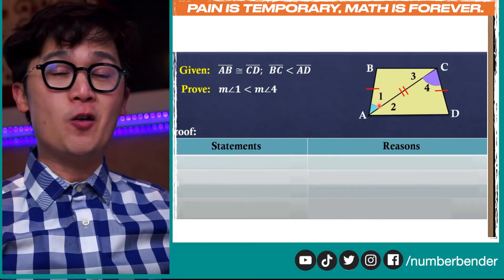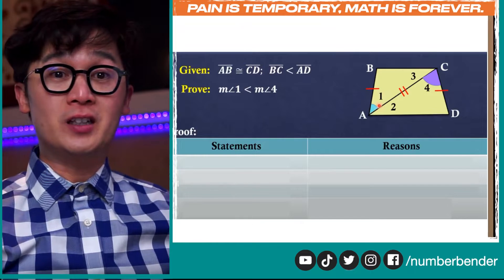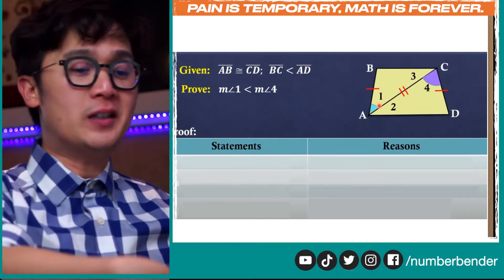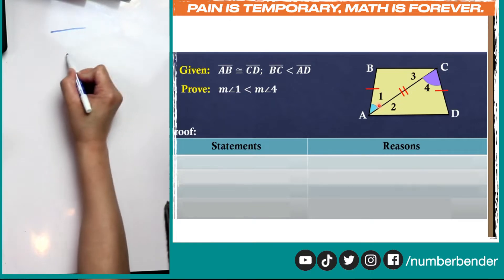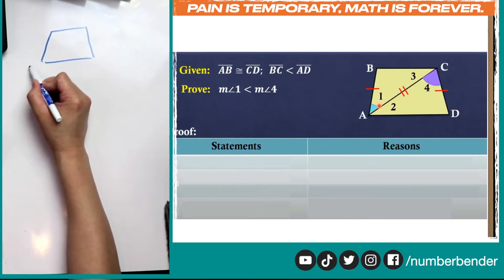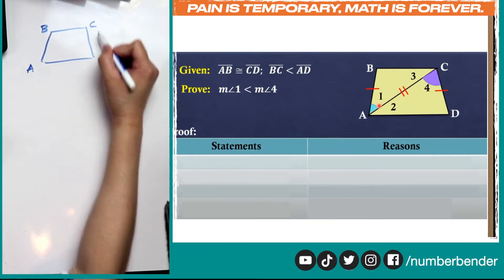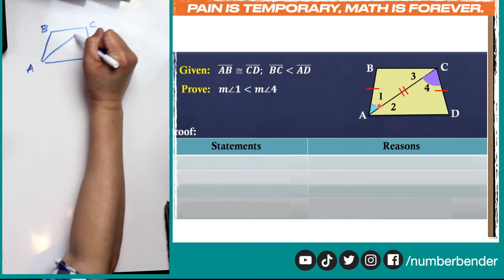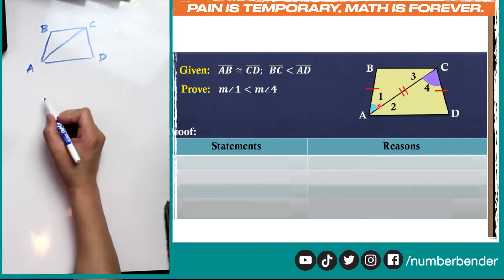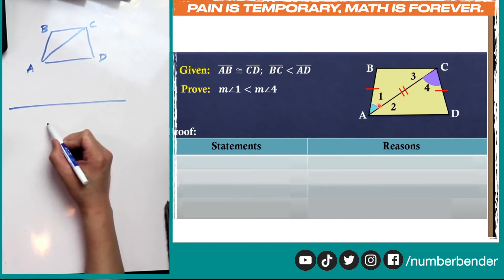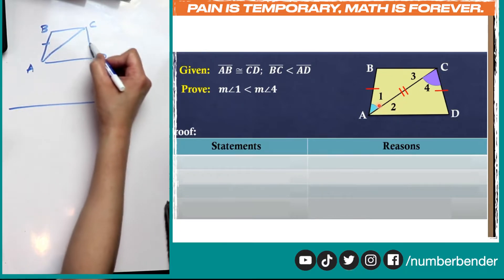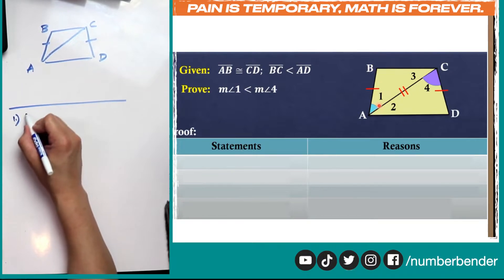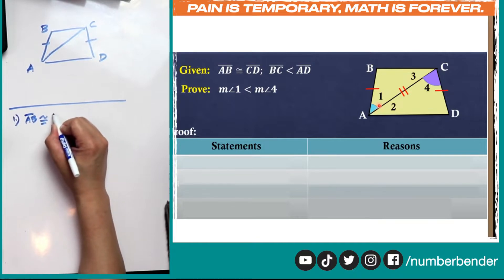In every proof, one of my best practices is to draw the figure and start from there and check the given information so that I'll be able to write my two-column proof a little easier. We have a quadrilateral with a diagonal that gives us two triangles, and in our first statement we know that AB is congruent to CD because it is given. We always start with the given information, so line segment AB is congruent to line segment CD.